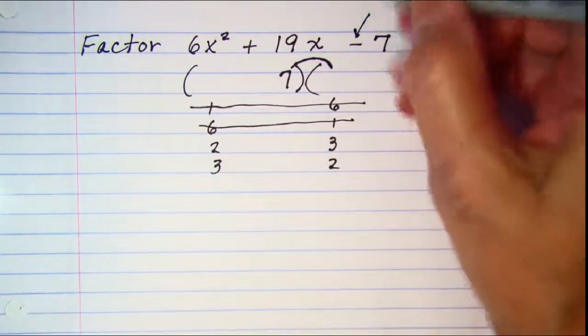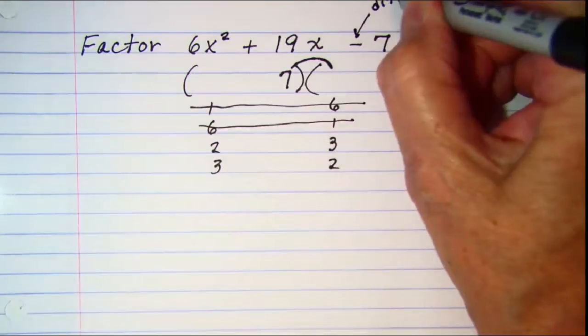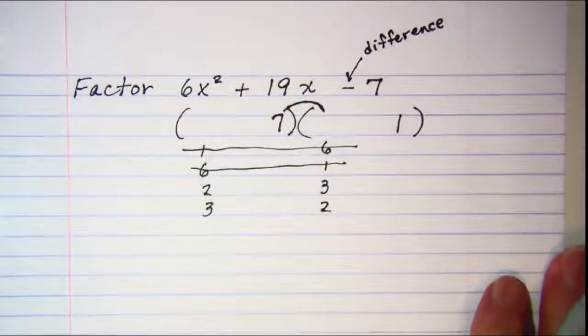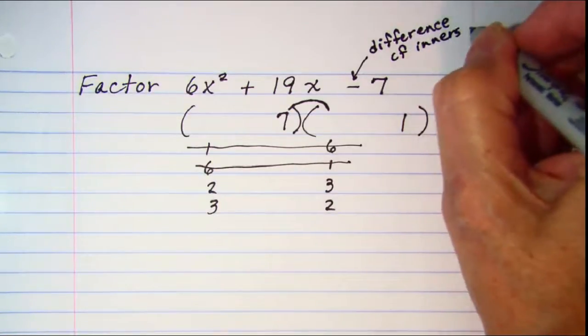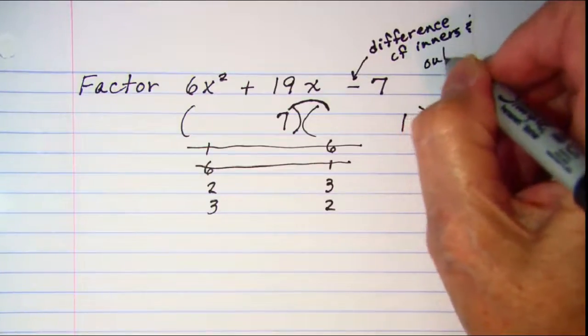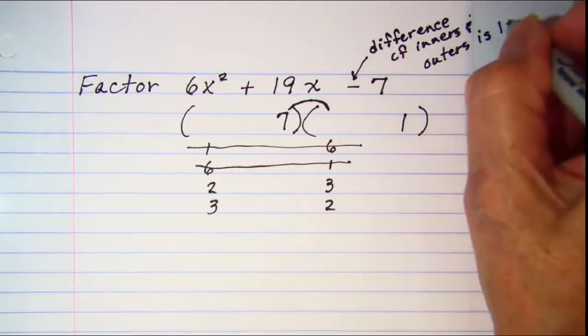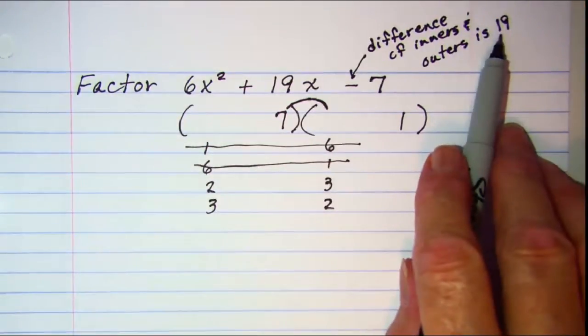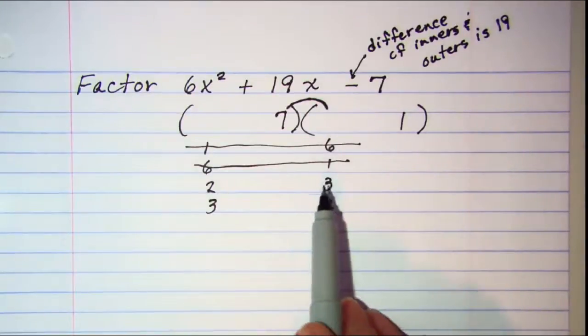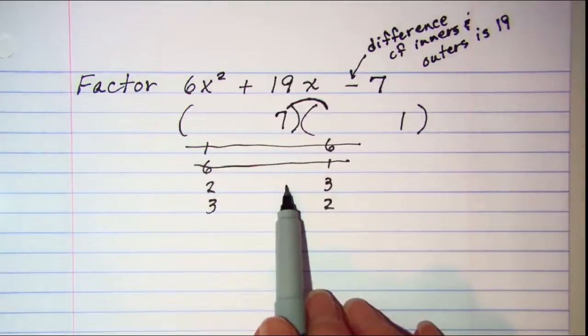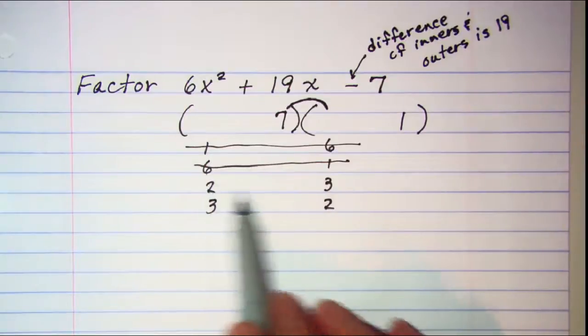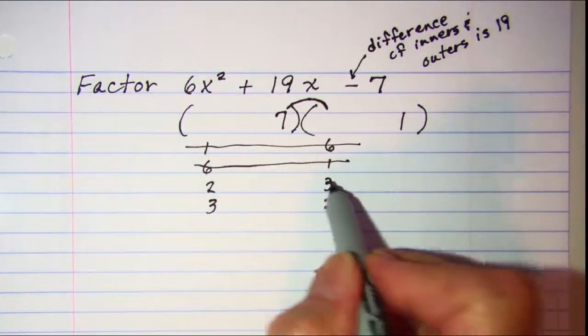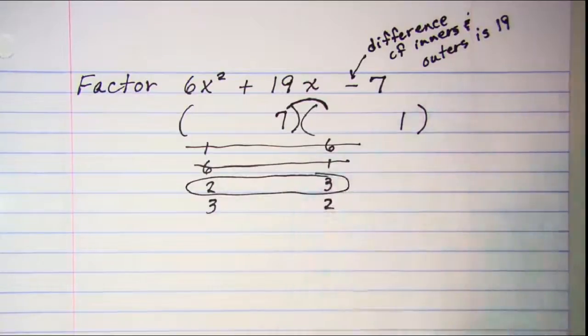So let me remind you, we're looking for a difference of inners and outers. It's 19 and we're just looking at the number, not the sign on that number. Alright, let's try our 2 and 3. My inner product is 7 times 3, which is 21. My outer product is 2 times 1, which is 2. 21 subtract 2 is 19. So it looks like this is the choice that I'm going to need to use.